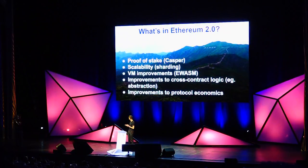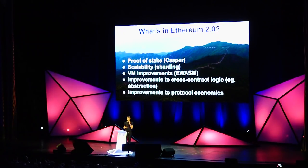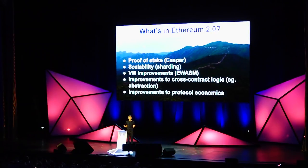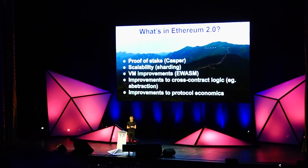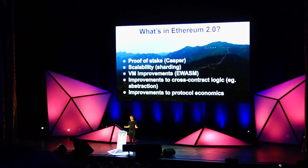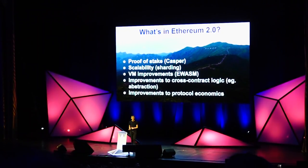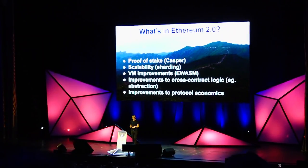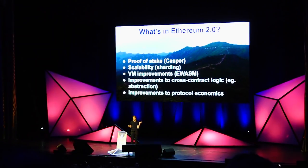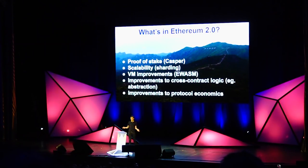So today I'm going to basically talk about Ethereum 2.0, but not just from a technical point of view, but more from the point of view of why Ethereum 2.0, what is Ethereum 2.0, and kind of how we got here. Ethereum 2.0 is a combination of a bunch of different features that we've been talking about for several years, researching for several years, actively building for several years, that are finally going to come together into one coherent whole. These features include proof-of-stake, Casper, scalability, sharding, virtual machine improvements, eWASM, improvements to cross-channel contract logic, improvements to protocol economics, and really the list goes on and on.